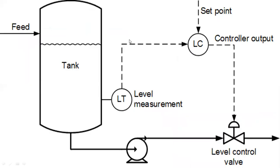For level control, the feed tank has a level transducer that measures the level and sends the signal to a level controller, which compares it with the set point. The controller output is sent to a level control valve. When the level drops, the pump output is reduced so that the tank always maintains a certain level corresponding to the set point.